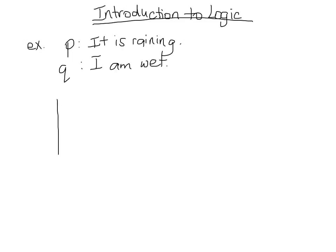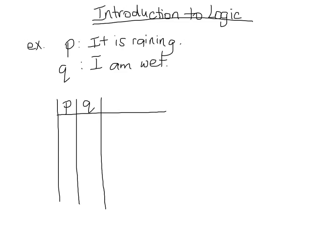I am going to make something called a truth table. A truth table helps us explore various combinations of these statements. We are going to look at everything possible — if they're both true, if they're both false, if one is true and one is false.